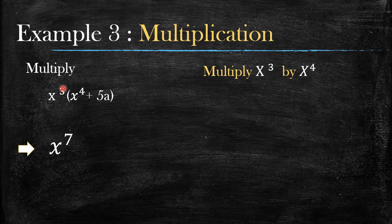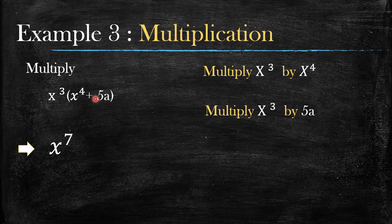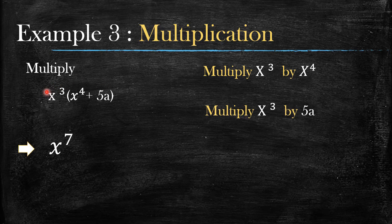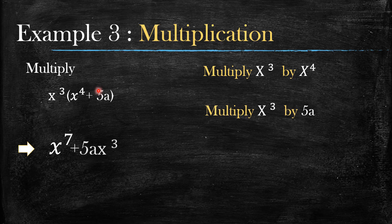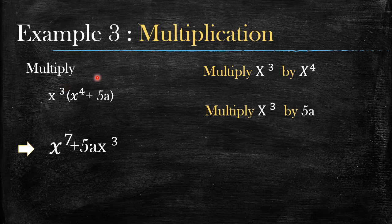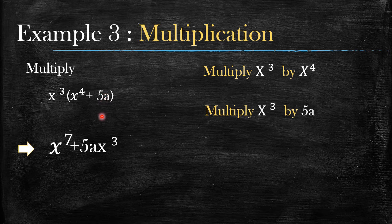Now take x³ and multiply it by positive 5a. There's no number in front of x³, so it's 1 times 5 which gives you 5. For the letters: x and a are not the same letters, so nothing combines. The 'a' comes down as-is and x³ comes down as-is. This gives you 5ax³.